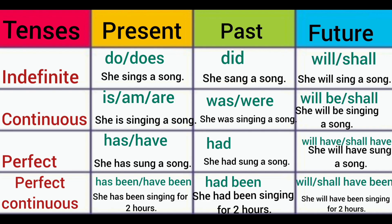In front of you there is a slide that mentions tenses. In the row we have mentioned the tenses — present, past and future. And in the column all aspects are mentioned — indefinite, continuous, perfect and perfect continuous. Let me start with the indefinite aspect.